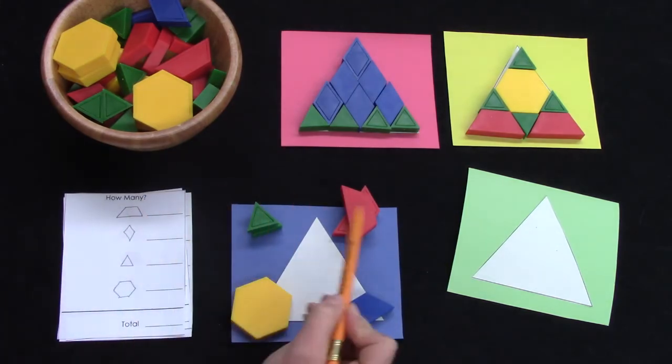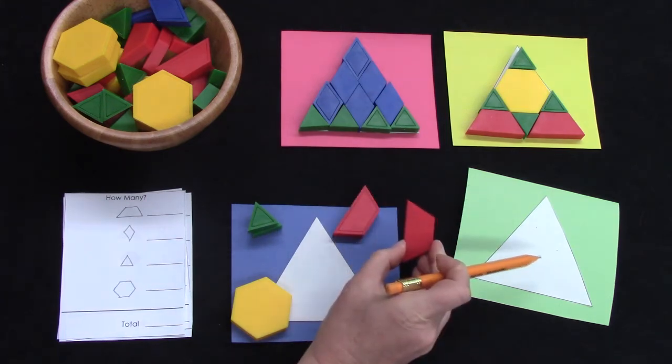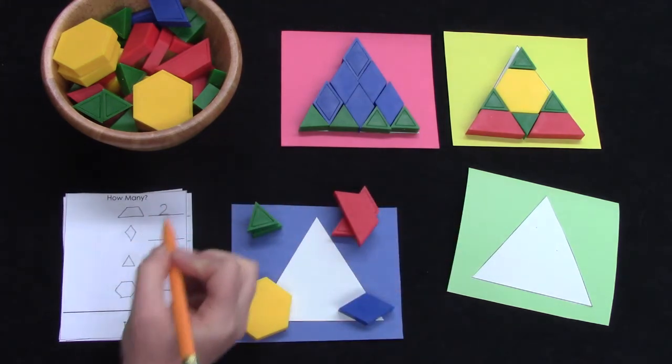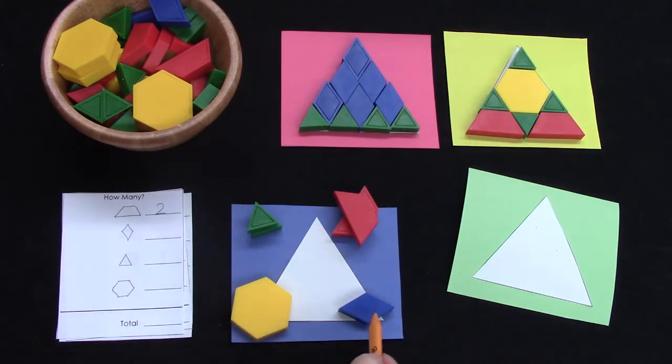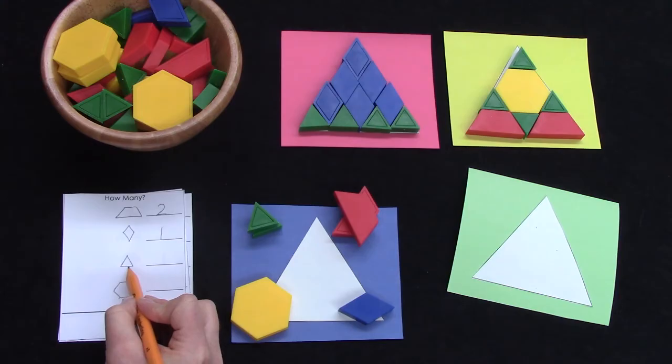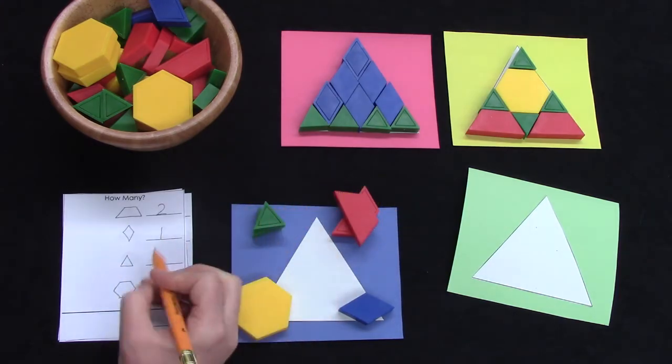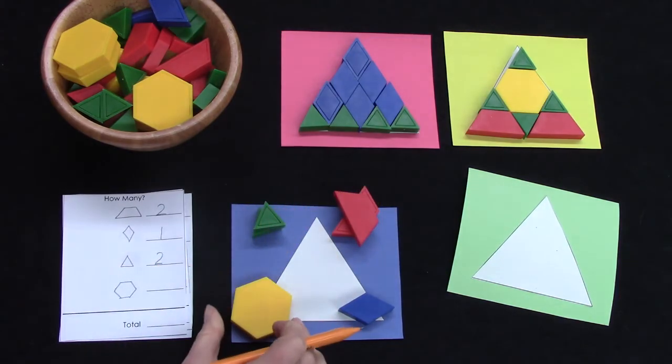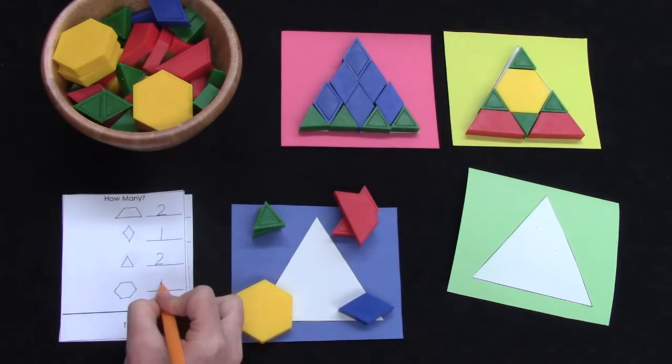How many trapezoids do I have? Two. So I'm going to write down two here on my chart. How many rhombus do I have? One. How many triangles do I have? Two. And how many hexagons? One.